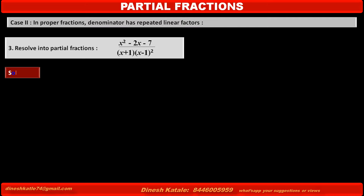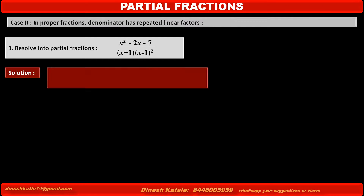Solution: One factor (x-1) of the denominator of the given fraction is a repeated linear factor, repeated two times, and the other factor is (x+1).